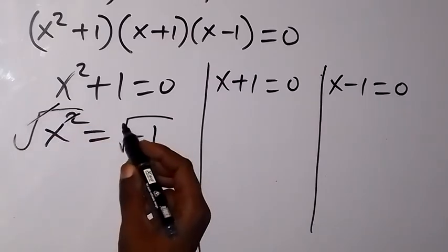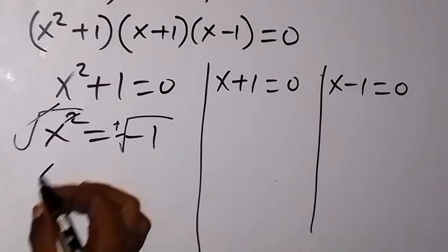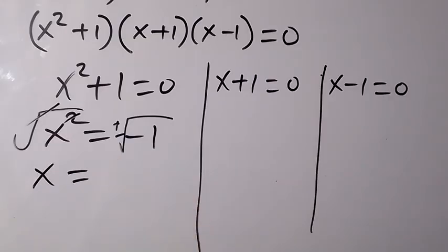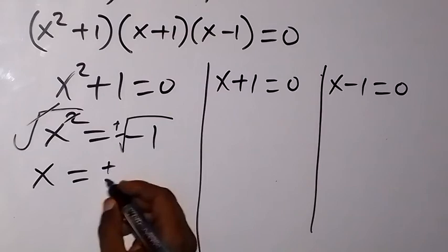So square, we cancel with square root, and we have plus or minus here. So we have x left here, then equals to plus or minus square root of minus 1. And square root of minus 1 is i. So we have plus or minus i.